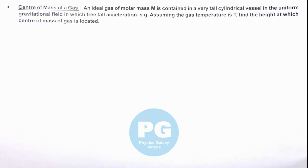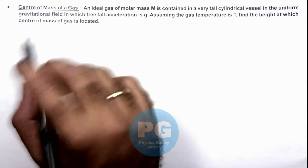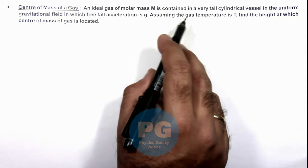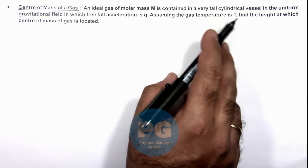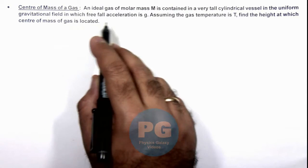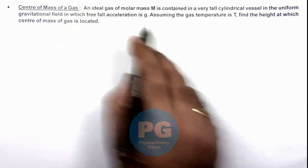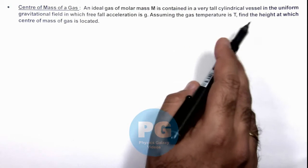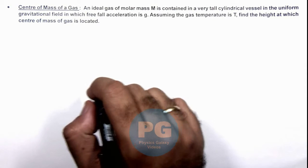In this illustration we'll discuss the center of mass of a gas. We are given that an ideal gas of molar mass M is contained in a very tall cylindrical vessel in the uniform gravitational field in which free fall acceleration is g. Assuming the gas temperature is T, we are required to find the height at which center of mass of gas is located.